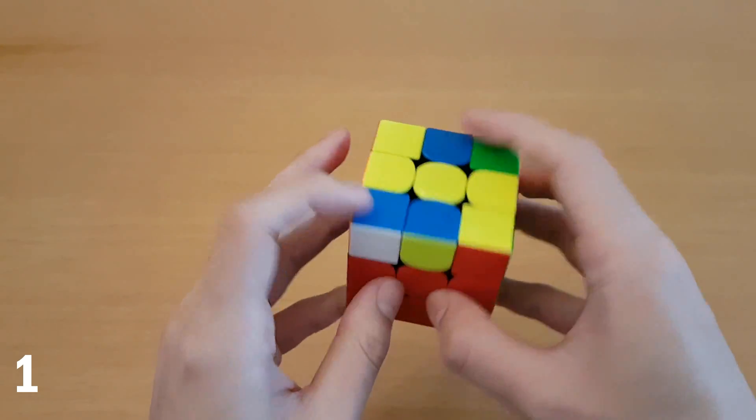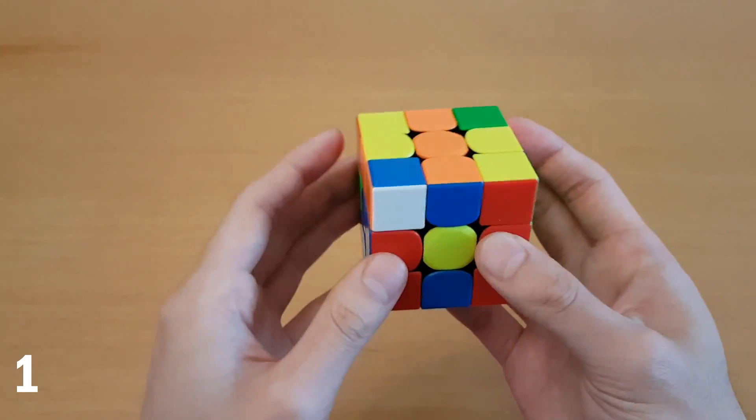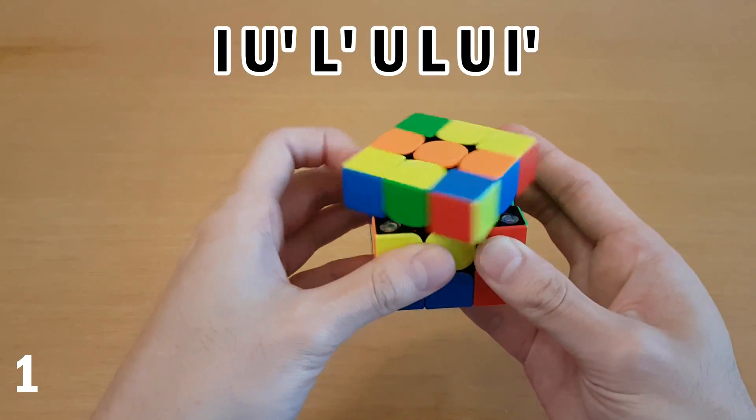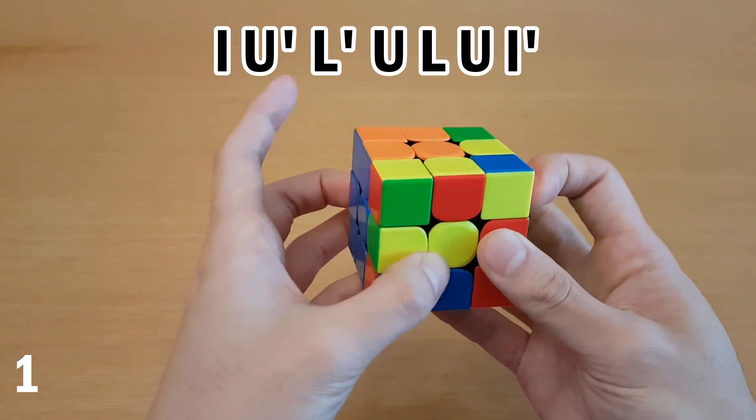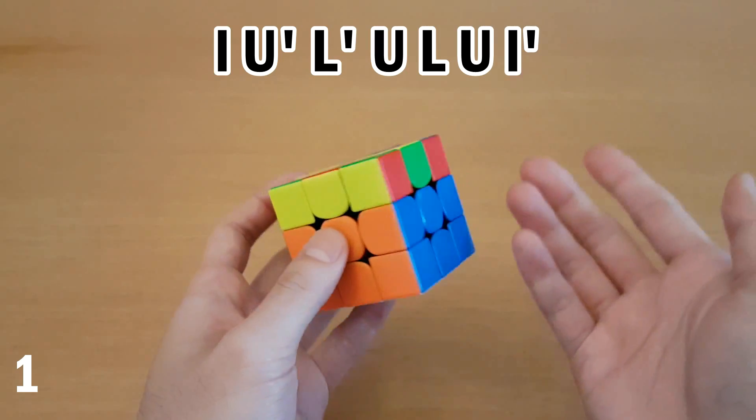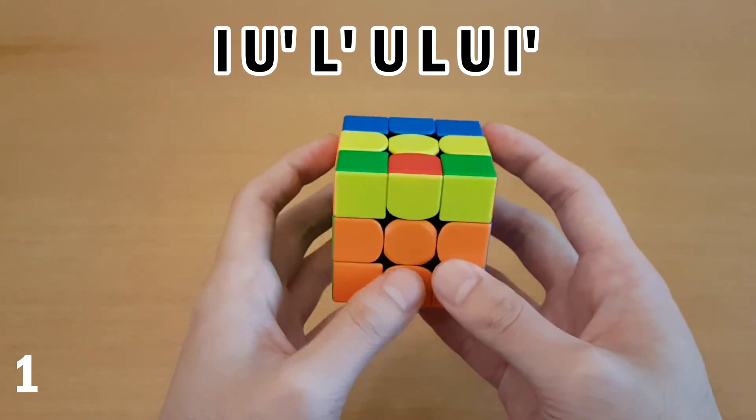And you can also do this from the back. So here you would picture that you're solving this case. So then you would start with the wide move and end with the wide move. This alg is best saved for last slot because it's hard to look ahead when you have the wide moves.